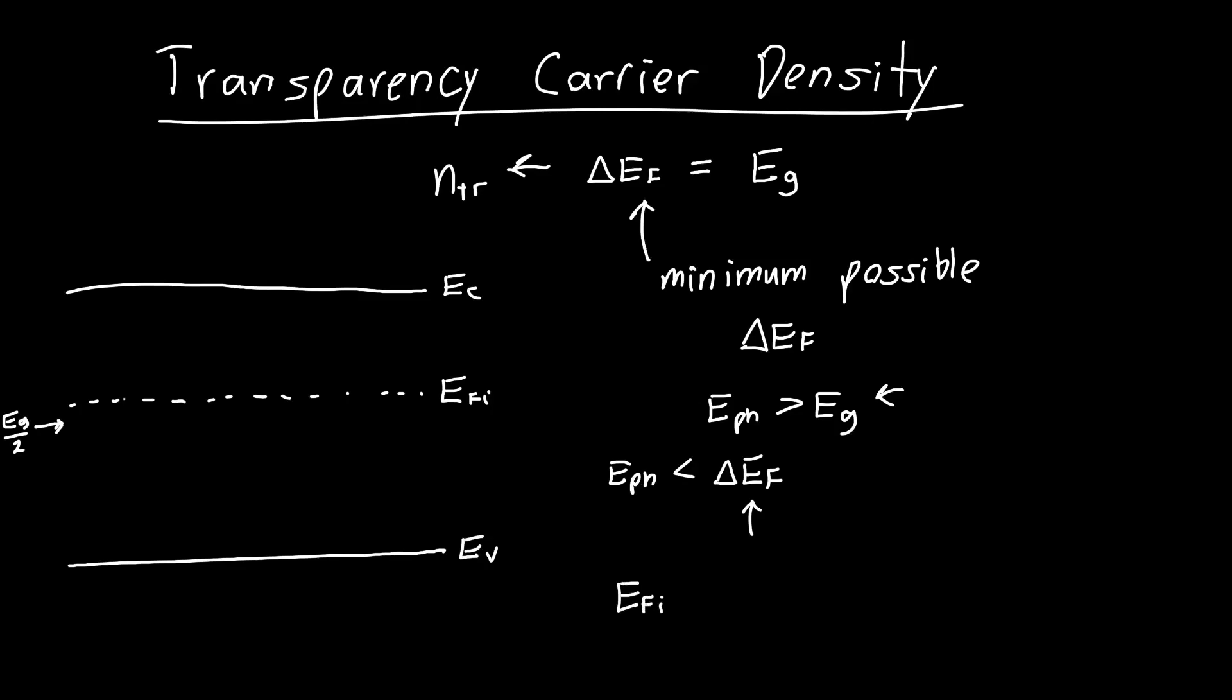We know that EFI minus E mid can be related to the effective masses. This is 3/4 times kT times the natural log of the hole mass over the electron mass. So usually that's about 2 kT, roughly.